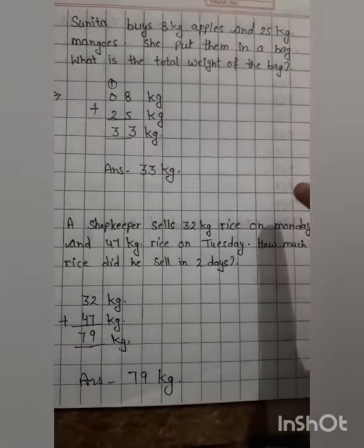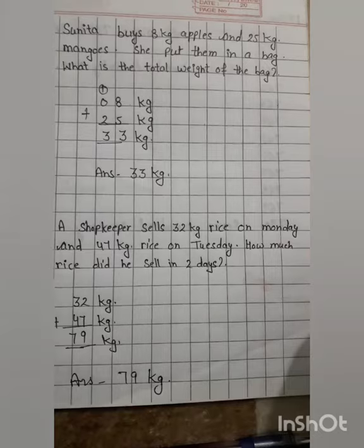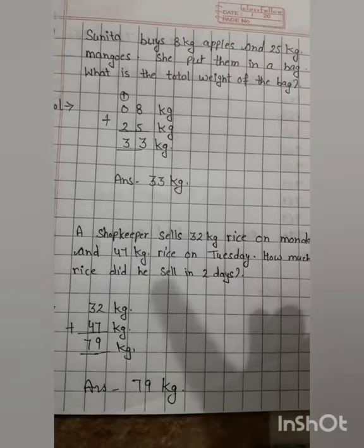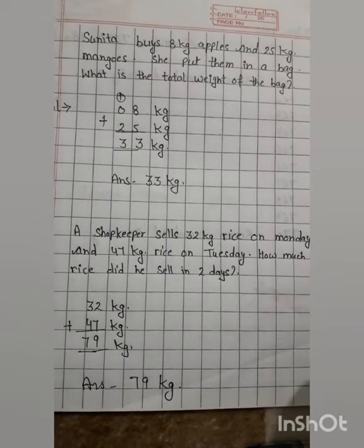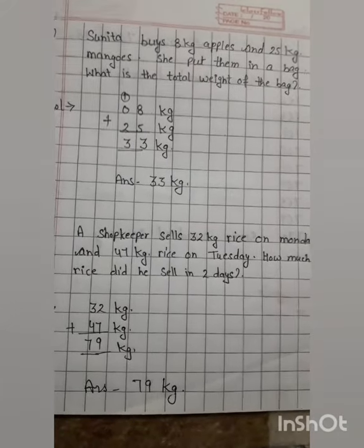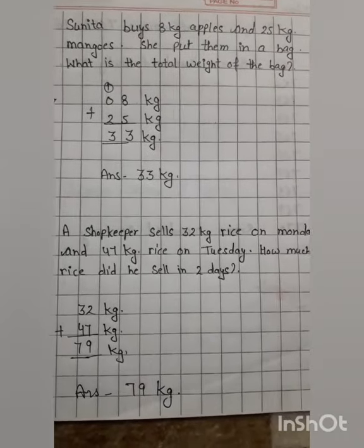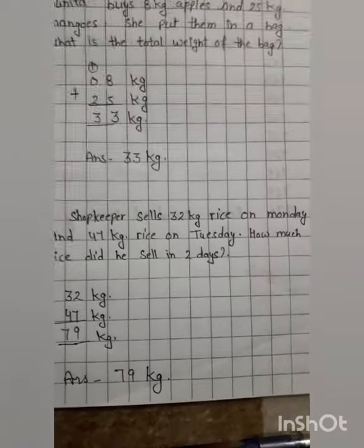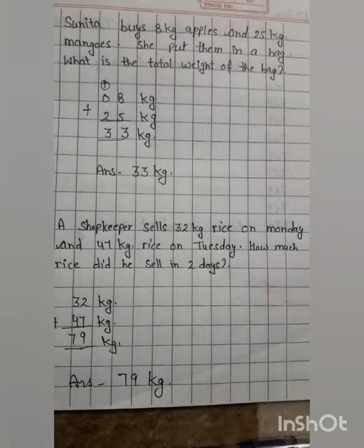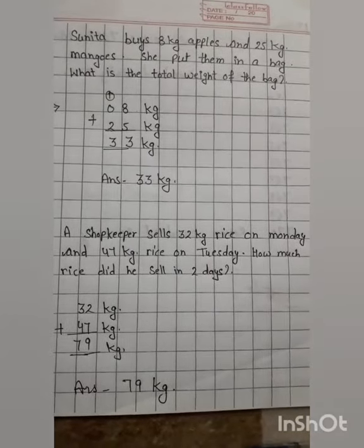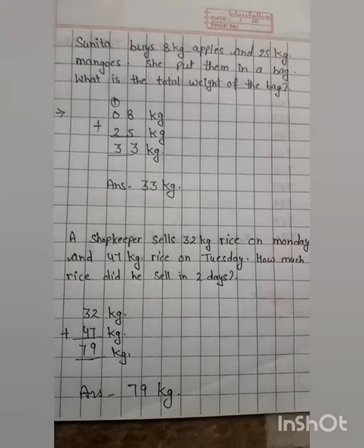A shopkeeper sells 32 kg rice on Monday and 47 kg rice on Tuesday. How much rice did he sell in two days? A shopkeeper sold 32 kg rice on Monday and 47 kg rice on Tuesday. How much rice did he sell in total in two days?